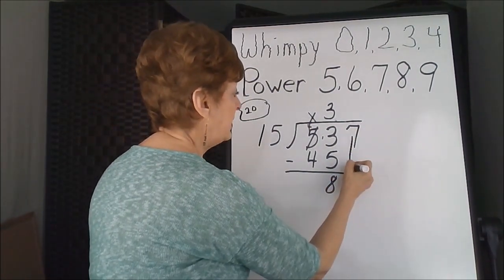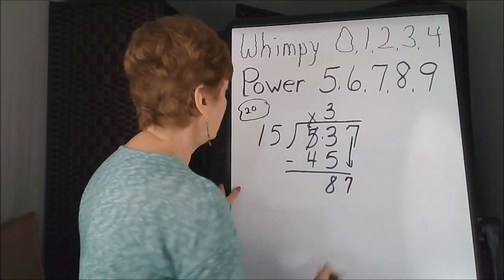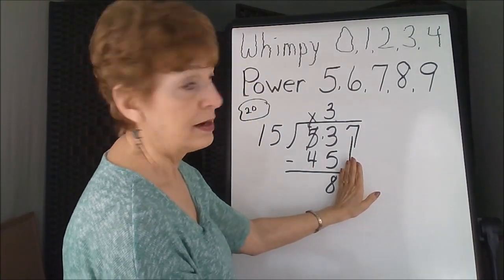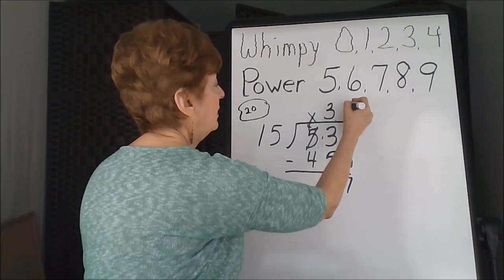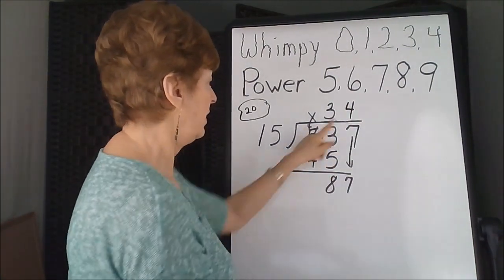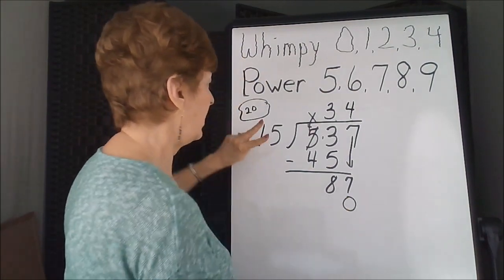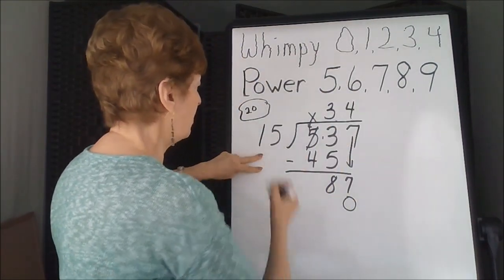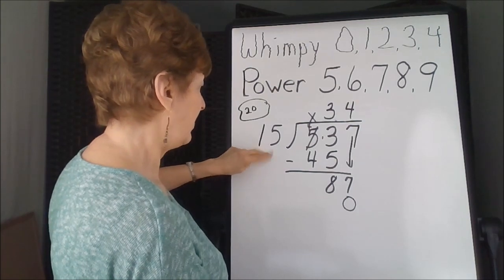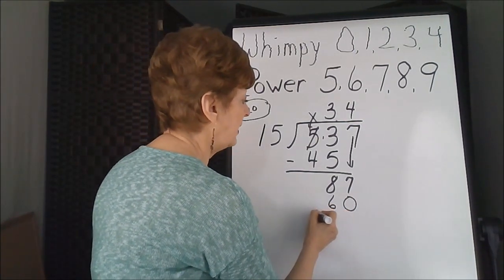Now we're going to bring down the 7. 2 goes into 8 4 times. 4 times 5 is 20, carry 2, 4 times 1 is 4, 5, and 6. This might be a little high as well.